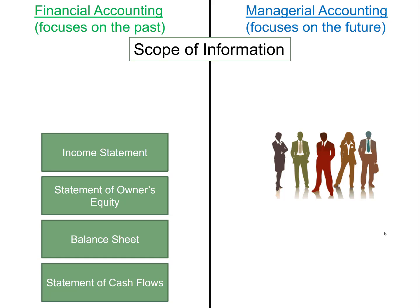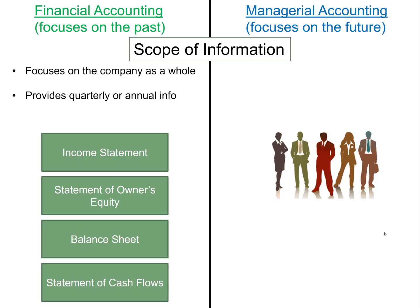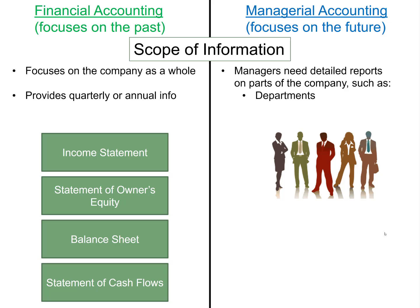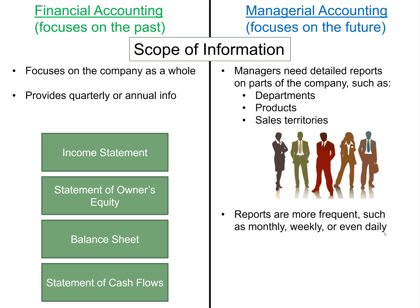There's also a different scope of information for financial accounting versus managerial accounting. Financial accounting data focuses on the company as a whole and provides information only quarterly or annually. But for managerial accounting, managers need more detailed reports on parts of the company, such as departments, products, or sales territories, and reports are often required more frequently — monthly, weekly, or even daily.